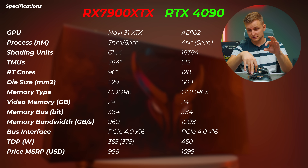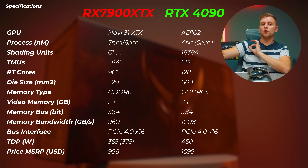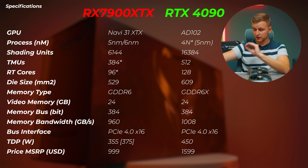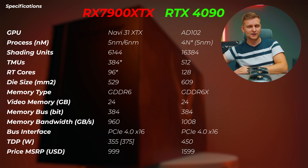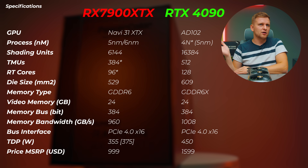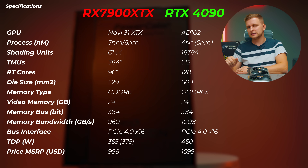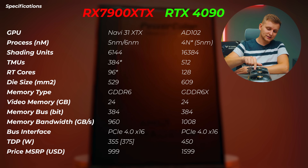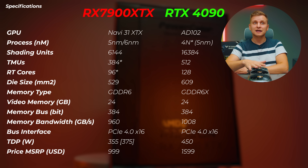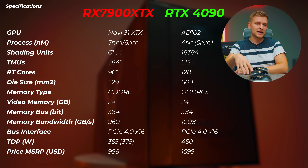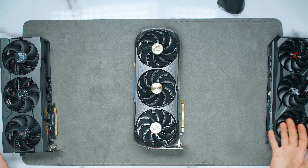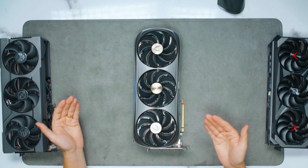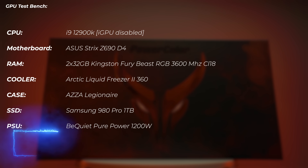In terms of MSRP, Nvidia launched at $1,599 and the XTX launched at $1,000. Right now, 7900 XTX cards can be picked up for around $899 — about $100 cheaper than MSRP. The cheapest 4090 I can find is about $50 more than its MSRP, so the price gap is even wider now. Looking at these specs, Nvidia should be so much better than AMD.